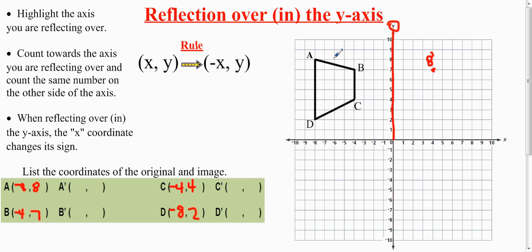A is 1, 2, 3, 4, 5, 6, 7, 8 away from the y-axis. Now I have to count the same amount: 1, 2, 3, 4, 5, 6, 7, 8 on the other side. You can check—you should be lined up with 8, and that is A prime.